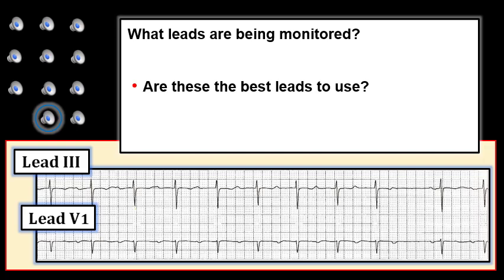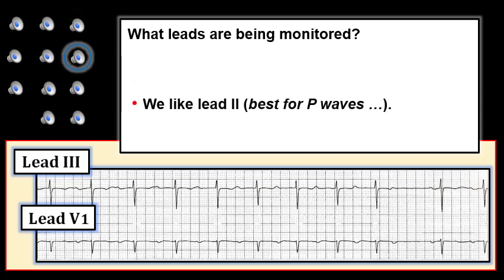In this case we might ask if lead III and lead V1 are the best leads to use. Lead III isn't my favorite — it's an inferior lead, but in general not nearly as good as lead II for picking up P waves. So my preference, if I only had one lead, would be to start with lead II, since this is usually the best lead for picking up P waves. I'll emphasize 'usually,' because lead II is not always the best lead for P waves — there are times, as for atrial flutter, when lead III may actually be better.